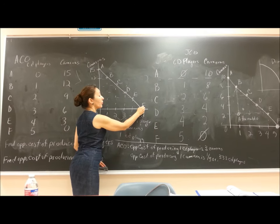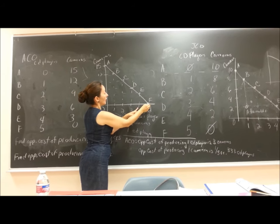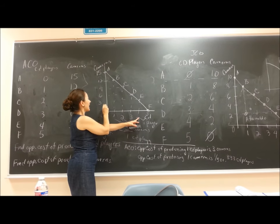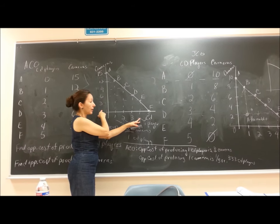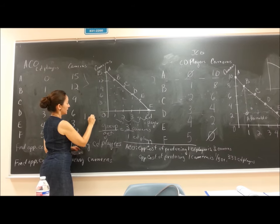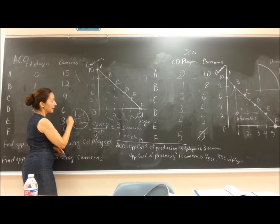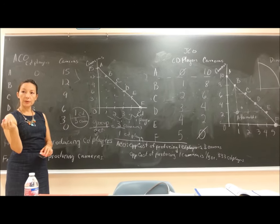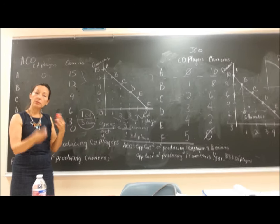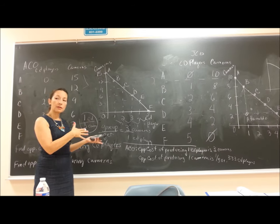Now going the other direction: if we're at point F and want to produce cameras, we give up one CD player and gain three cameras. So what you give up is one CD player and what you get is three cameras — making the opportunity cost of producing one camera one-third of a CD player. That's the trade-off we're measuring here.